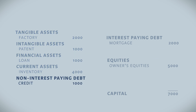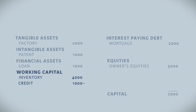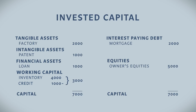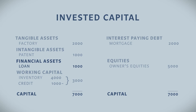That looks as follows. One subtracts the non-interest paying debt of 1000 from the current assets of 4000 to get to what we call working capital of 3000. On the left we now see the invested capital broken down into 4000 fixed assets and 3000 working capital, which equals the total amount of capital invested of 7000.